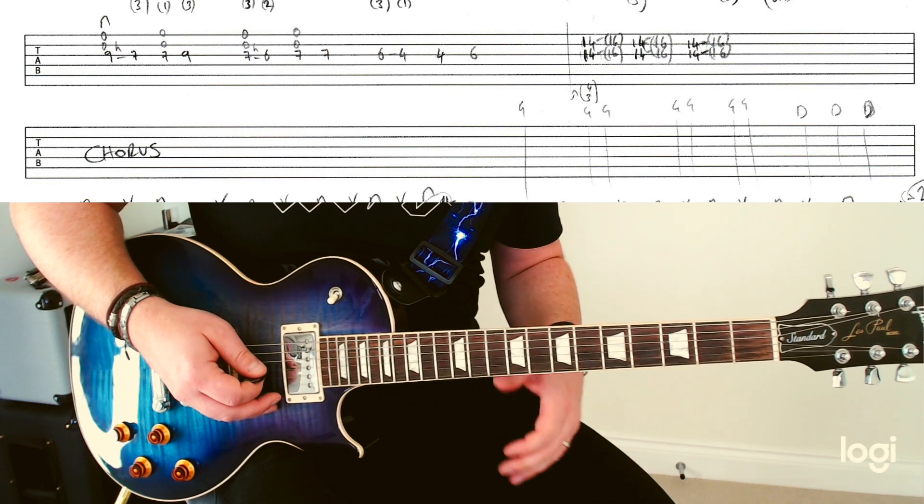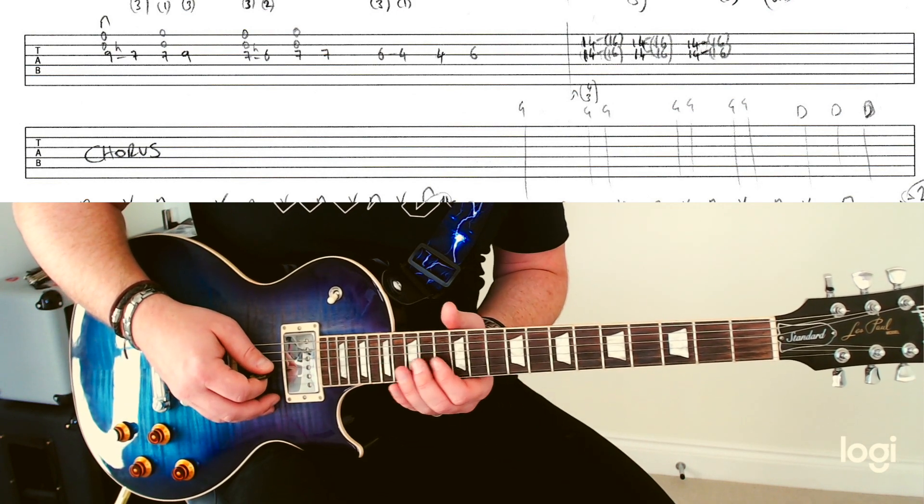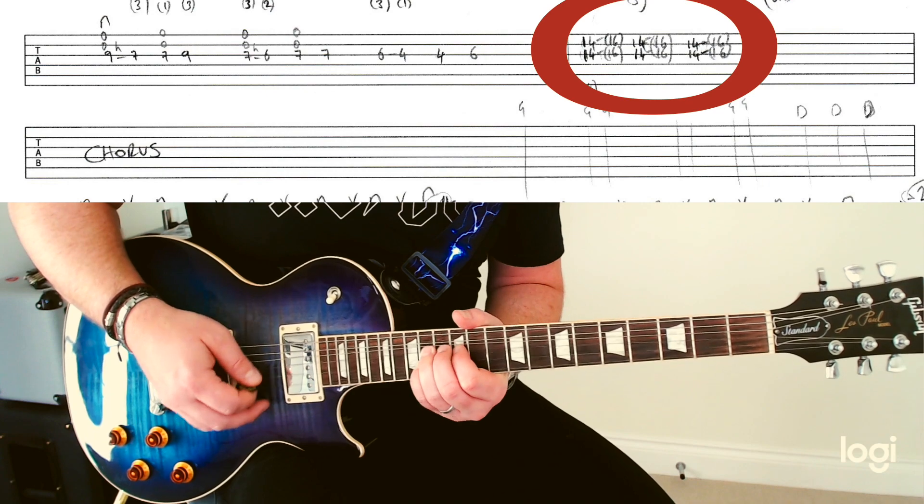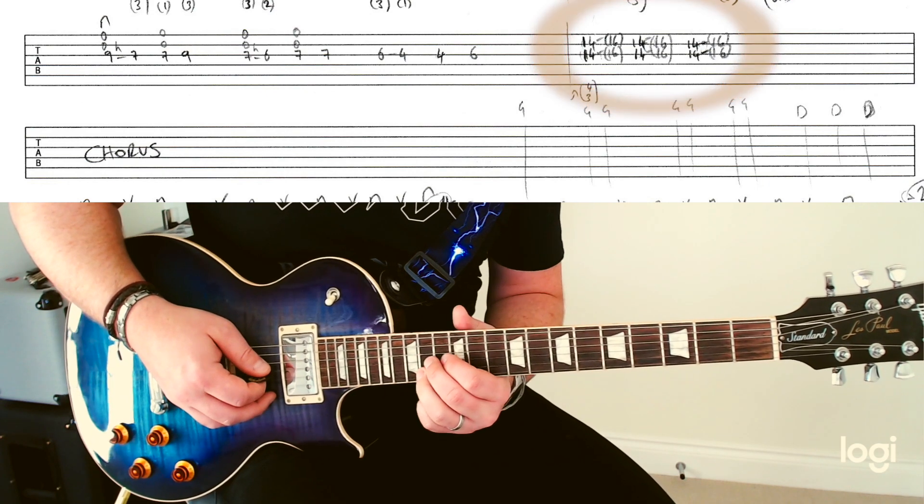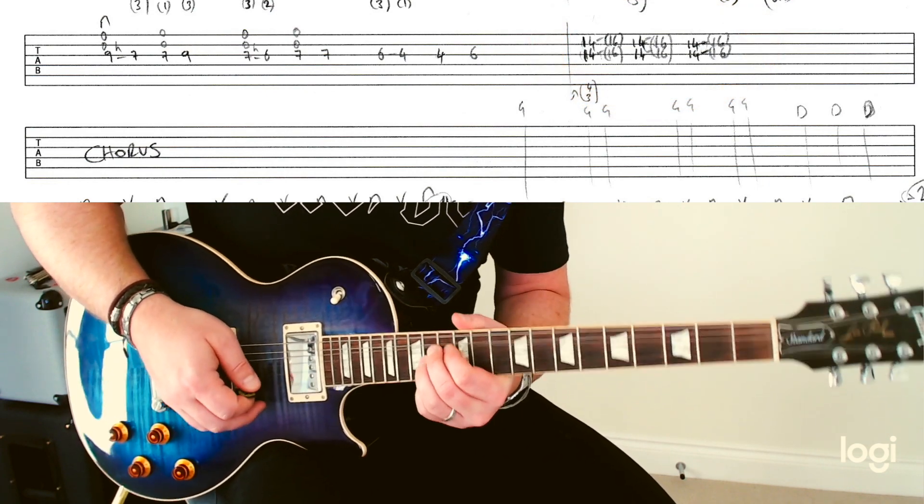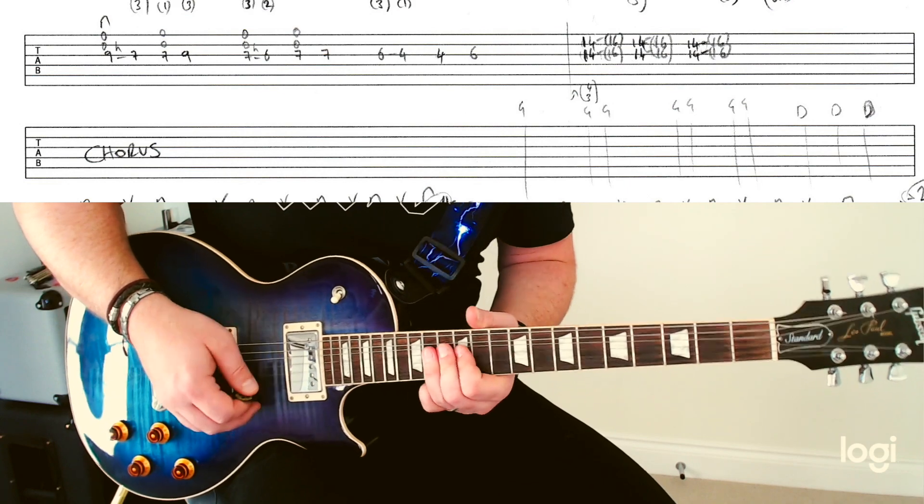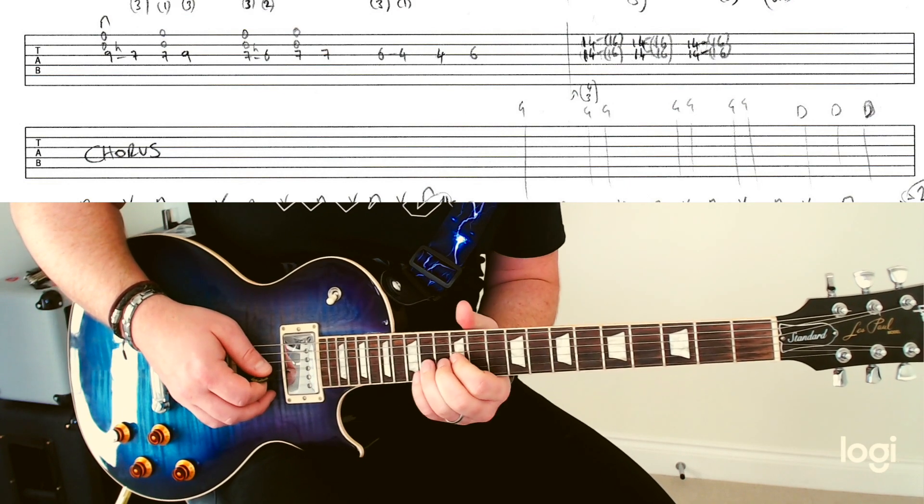Then just before it gets back into the chorus, you're going to slide up to here and grab these with the 3 and the 4. Or you can do a 2 and a 3 if you prefer, or even just 3s. But I think the 3 and a 4 is probably the best.